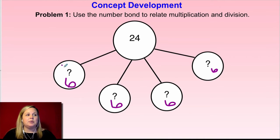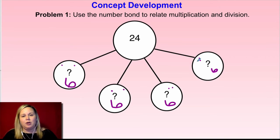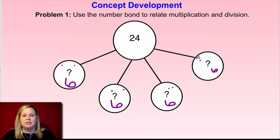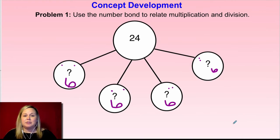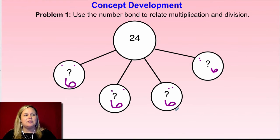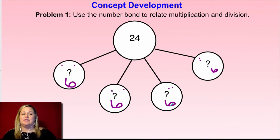You could also do the fair share, distributing one at a time into each group until you go through all 24 cups. The unknown in this number bond represents the size of the groups. We know how many groups there are — there are four. But when we were solving this number bond, we didn't know that six went in each one. So that was the unknown: the size of each group.